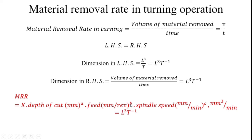The second input parameter for material removal rate is feed, raised to arbitrary exponent B, which can be derived from experimental data with different workpiece materials. The third input parameter is spindle speed raised to arbitrary exponent C, also collected from experimental data.